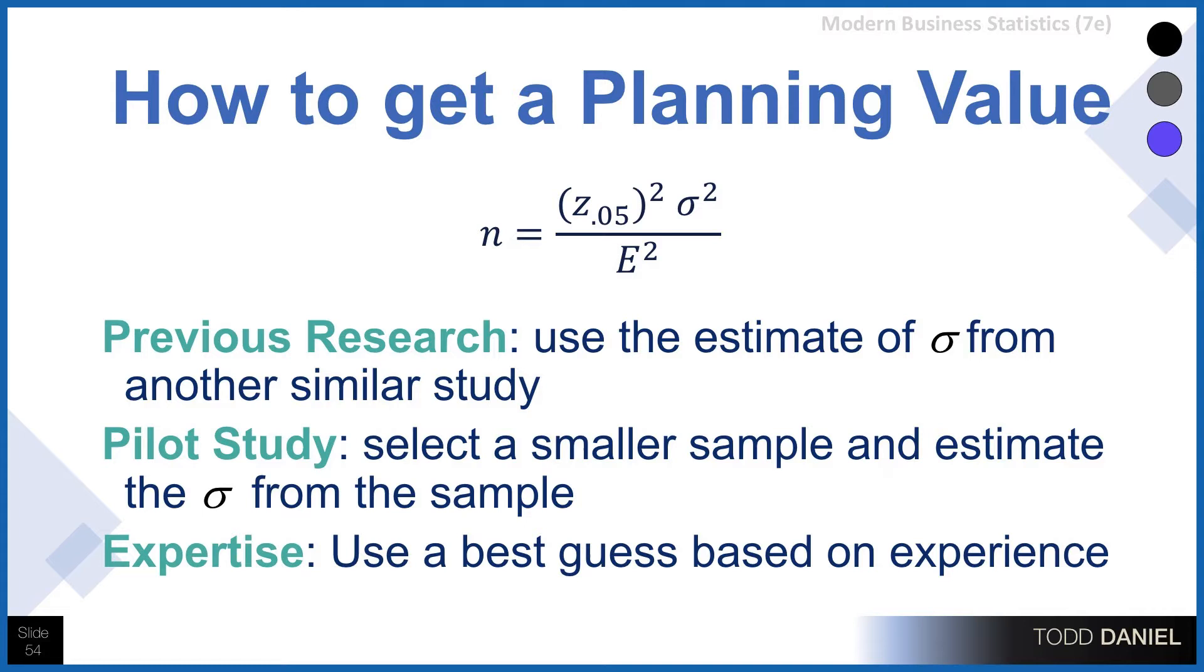How do we calculate a planning value? We can get the planning value from previous research. Maybe other research has calculated or been aggregated on a large number of studies. We have a pretty good estimate for the population standard deviation.